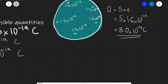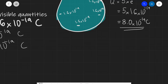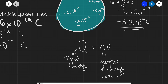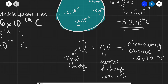We can make an equation out of this: the total charge Q is equal to N times the elementary charge e, where Q is the total charge in coulombs, N is the number of charge carriers (it could be electrons, protons, or more generally carriers of the elementary charge), and e is the elementary charge, 1.6 times 10 to the power of minus 19 coulombs.